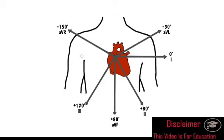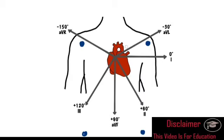For the purpose of the axis, only the limb leads are important — you can forget about the chest leads. There are four limb leads: one sits on the right shoulder, one on the left shoulder, one on the left ankle, and one on the right ankle. Leads 1, 2, 3, AVL, AVF, and AVR are calculated by looking at the difference in electrical activity between two of these leads.